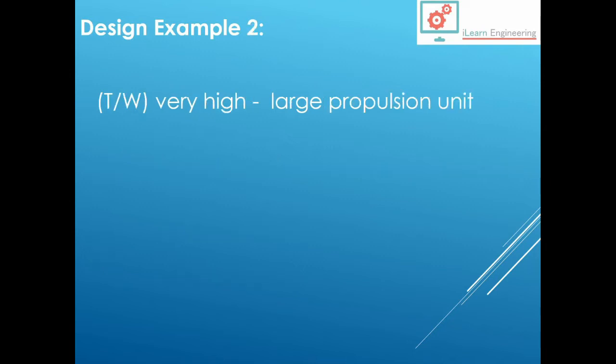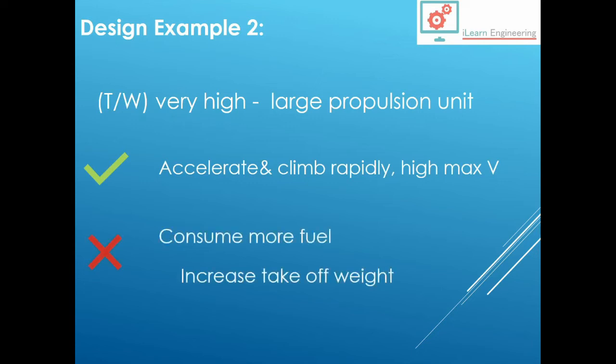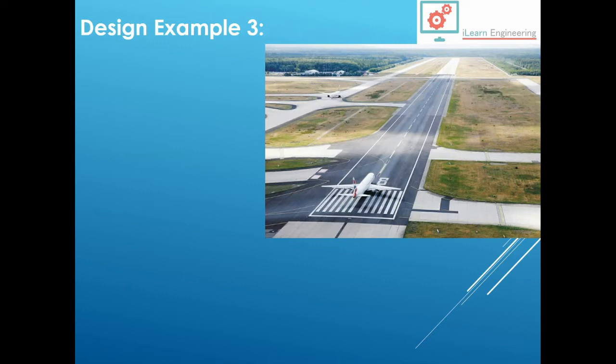Now let's look at design example number 2. This is the thrust to weight. Let's consider a very high thrust to weight ratio. This would be achieved by having a large propulsion unit, for instance. Well, the advantage of that is that they would be able to accelerate and climb rapidly with a very high maximum flight velocity V. But it's going to consume more fuel. And because it's going to consume more fuel, we're going to have to store more to begin with, which is going to increase its takeoff weight and affect its efficiency. So you can't have an advantage without having a disadvantage.